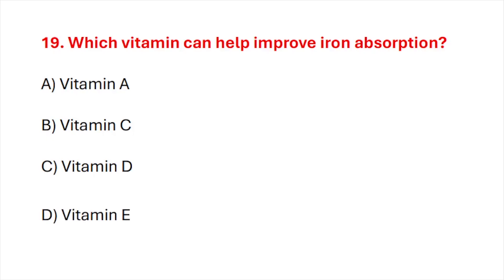Question number 19. Which vitamin can help improve iron absorption? Correct answer is option B: Vitamin C.